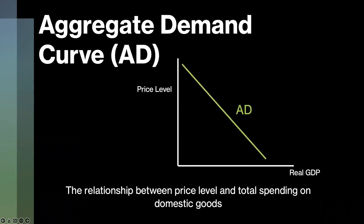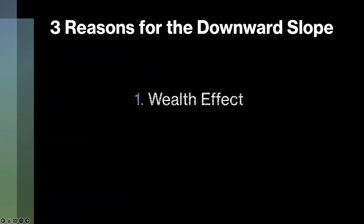The aggregate demand curve has a downward slope for three different reasons. First is the wealth effect, which means that as households have less wealth from inflation or prices rising, they are inevitably poorer and therefore decrease their consumption rates.